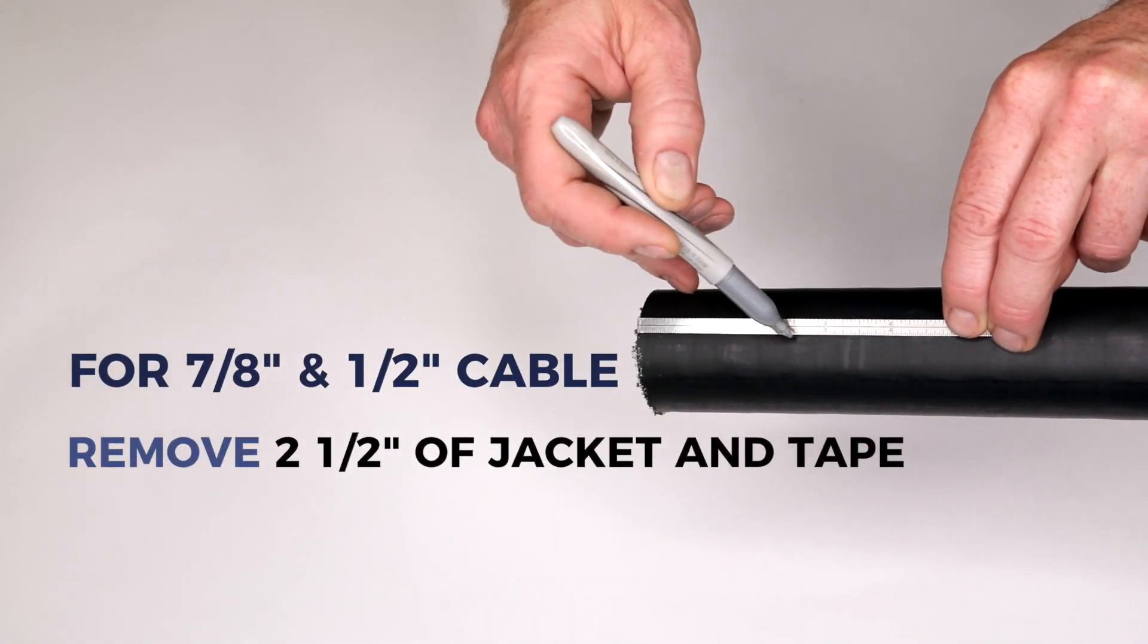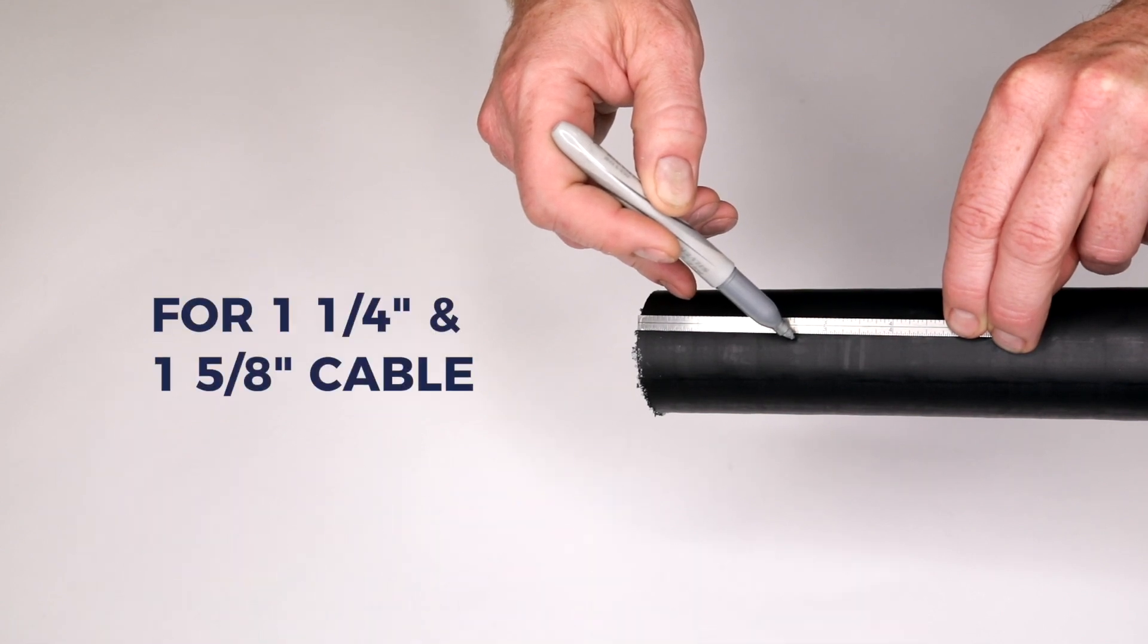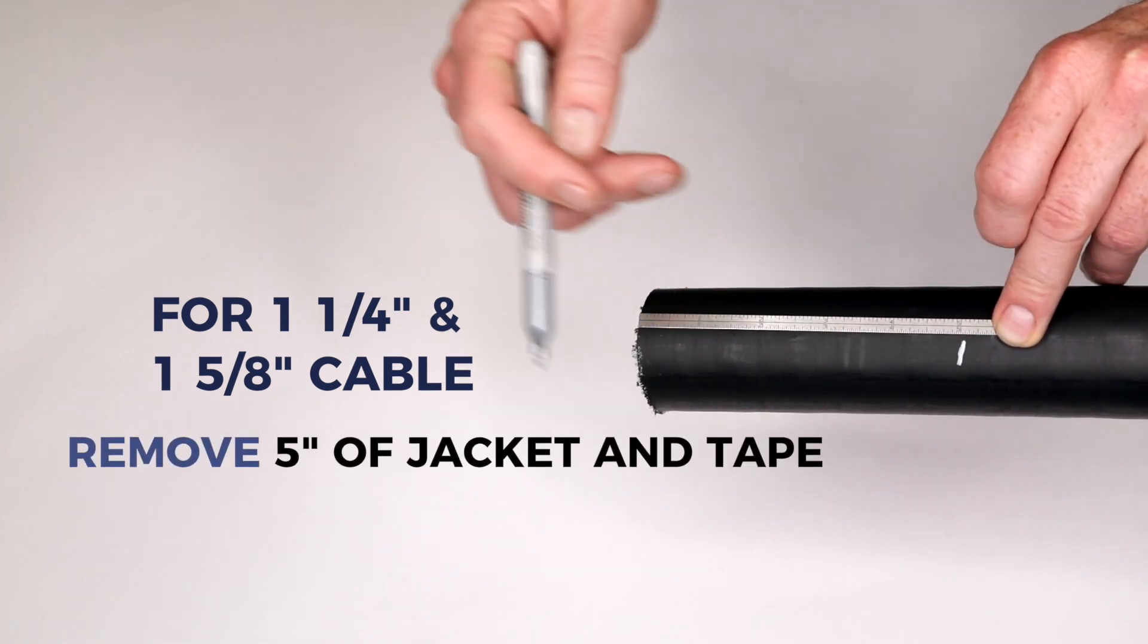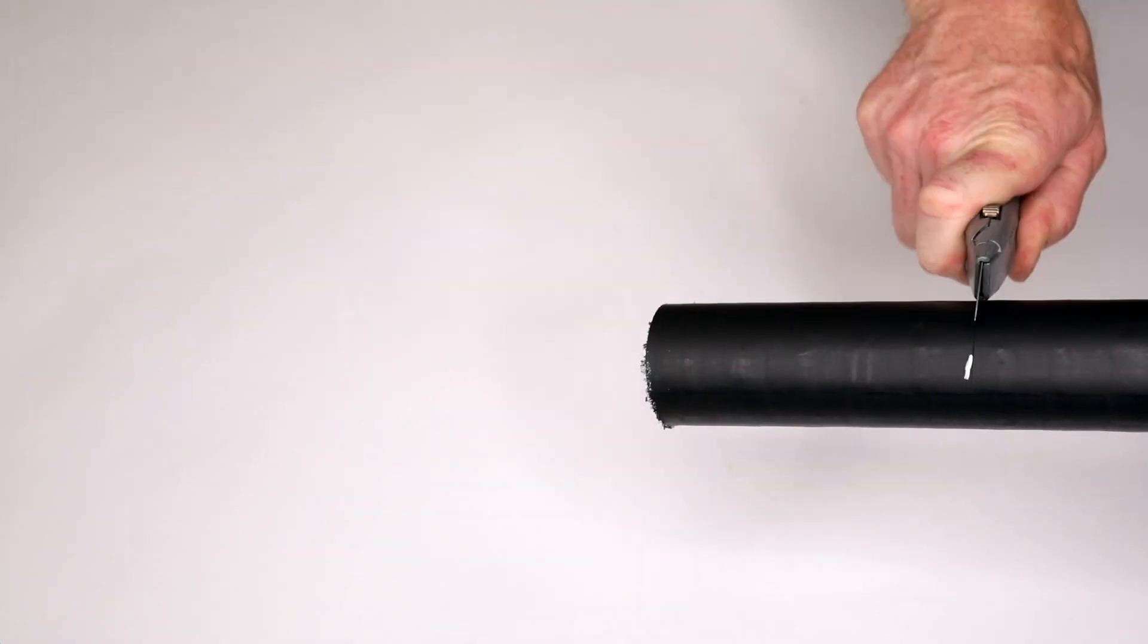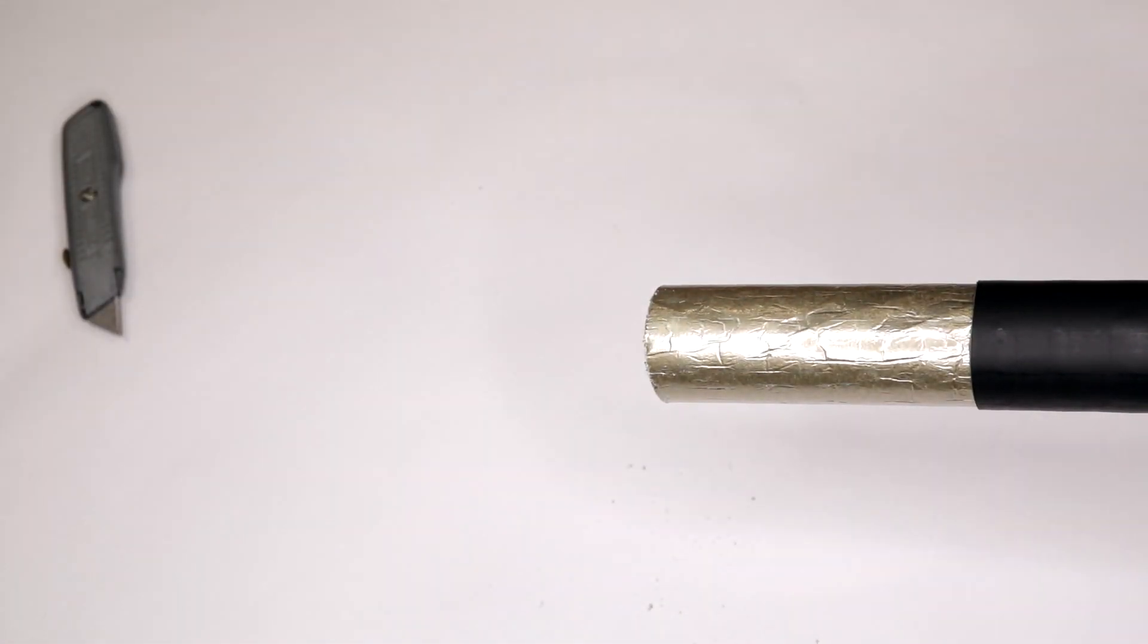For 7/8-inch and half-inch diameter cables, remove 2.5 inches of jacket and tape. For 1-1/4-inch and 1-5/8-inch diameter cables, remove 5 inches. Using a razor knife, remove the jacketing and any tape, making sure not to cut through the outer conductor.